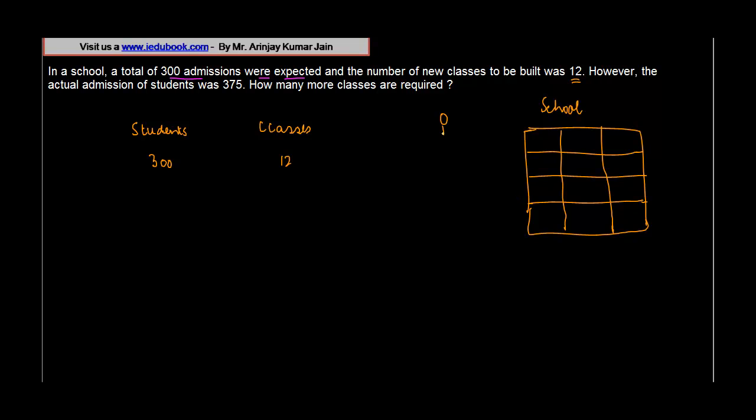So as new students come in, they will drop them into a particular class - one, two, three, four, five, six, seven, eight, and so on. There's a particular number of students which is plugged into each of these classes, and there are 12 such classes. So two, three, four, five, six, seven, eight, nine, ten, eleven, twelve. There are 12 classes which are to be built for 300 students.